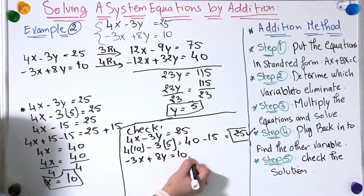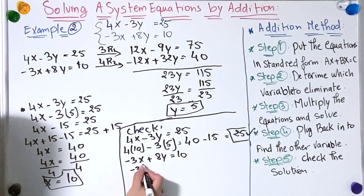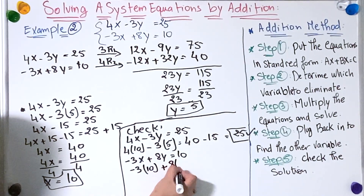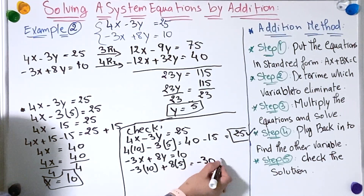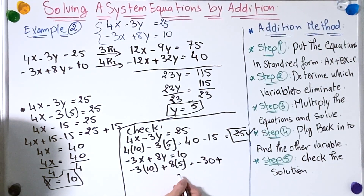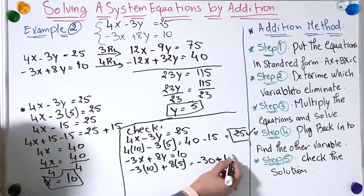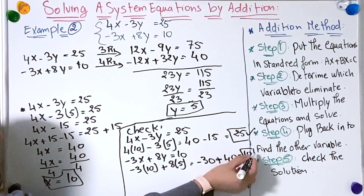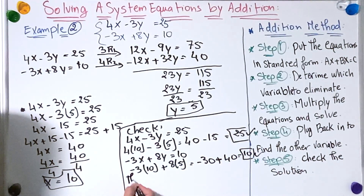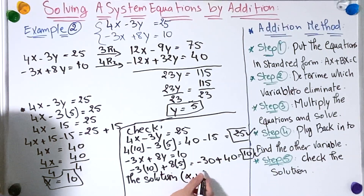Now the second equation: minus 3x plus 8y equals 10. Replacing x and y: minus 3 multiplied by 10 plus 8 multiplied by 5. That gives minus 30 plus 40, which equals 10. This is true too. So the solution is (x, y) equals (10, 5).